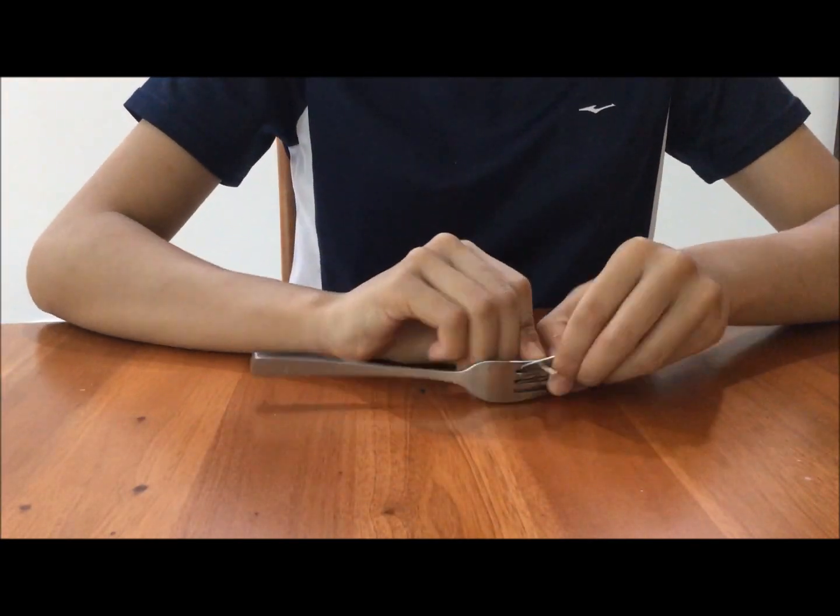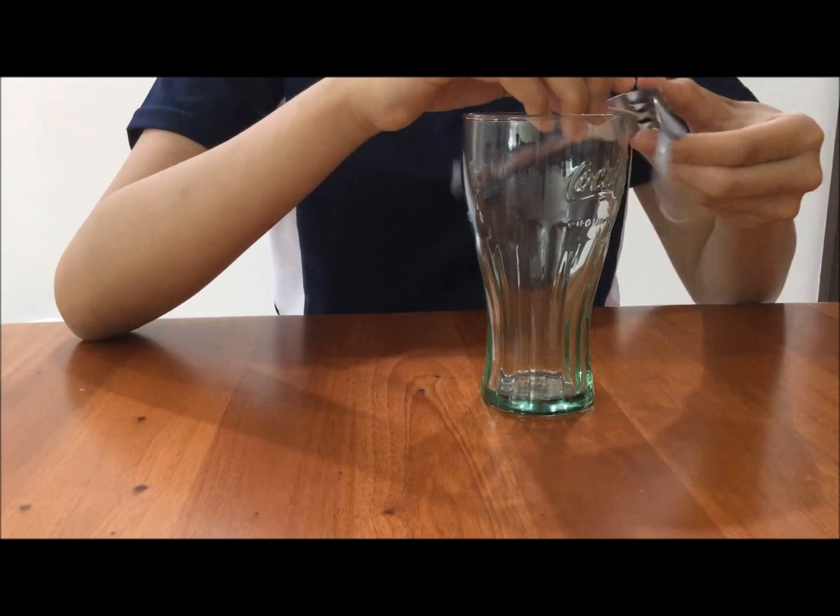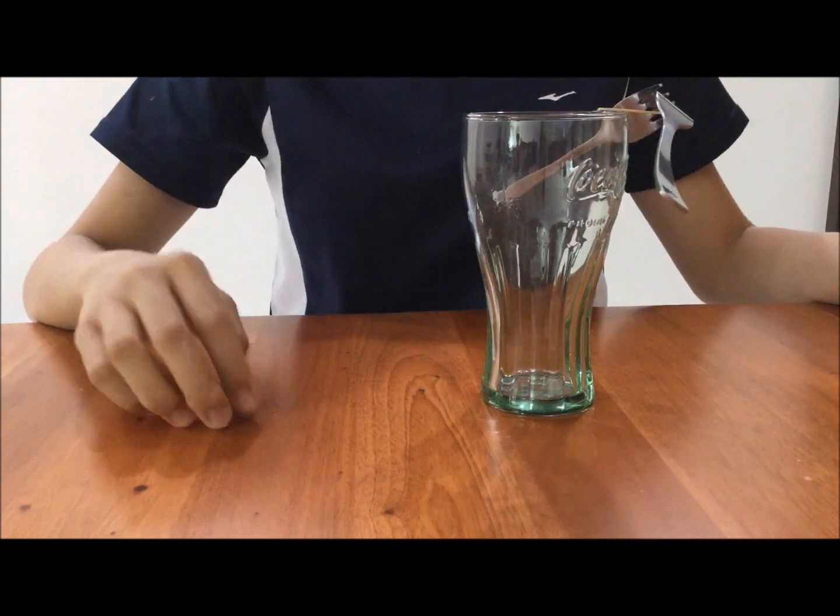Following that, work the toothpick into the tines of the fork. Set the toothpick on the rim of the glass and slide until the best balance point is found.